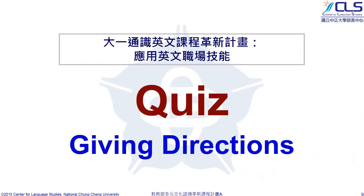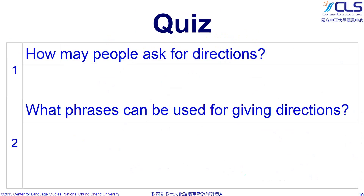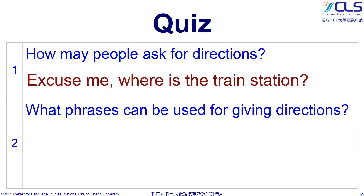Now, let's go with a more challenging task — the quiz. Answer the following two questions. Number one: how do people ask for directions? They usually say, 'Excuse me, where is the train station?' Question number two: what phrases can be used for giving directions?